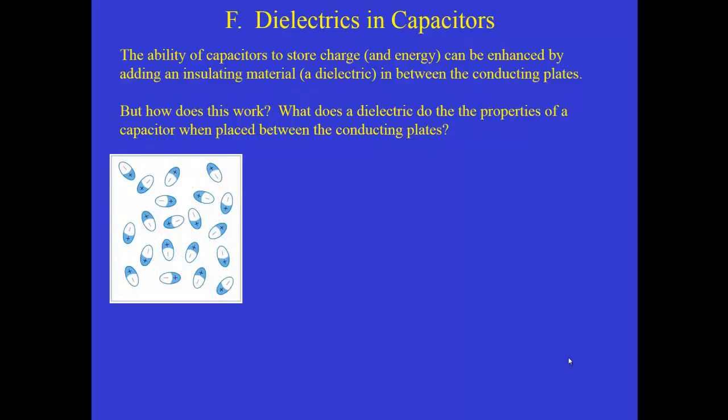We can understand this in a very cartoonish fashion by imagining that a dielectric has in it polar molecules which, unless they're subject to an external field, are generally random in their orientation. So in this sketch, consider each of these football-shaped objects as a dipole that has a positive and a negative end, but you can see initially they're randomly oriented.